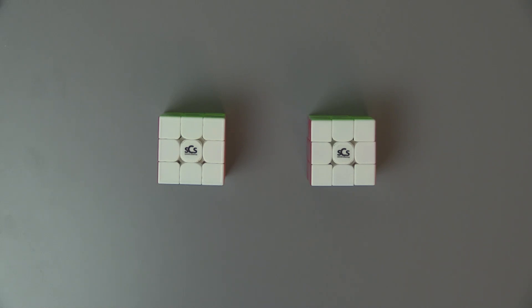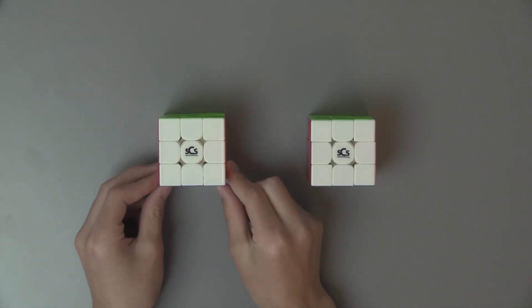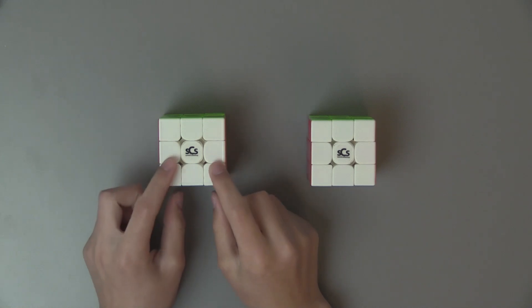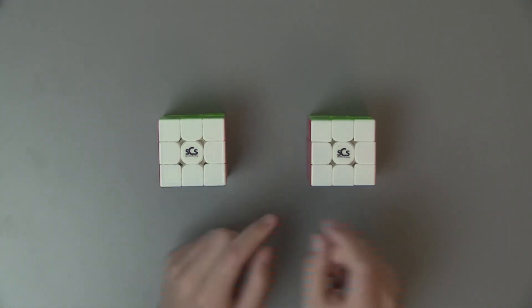So first, let's check out price. The Weylong GTS-3M was $35 on speedcubeshop.com, and the WRM is $39 on speedcubeshop.com.